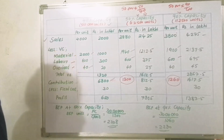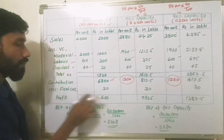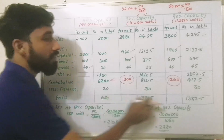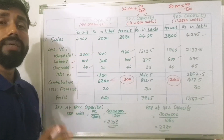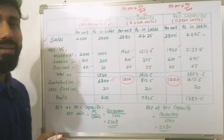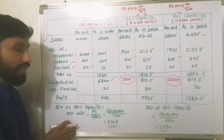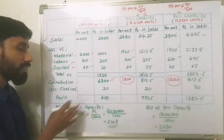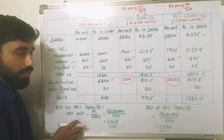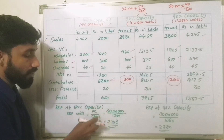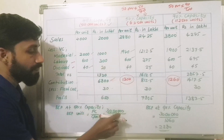Fixed cost is Rs. 30 lakhs. From contribution minus fixed cost, we can find the profit at 50% and 90% capacity. BEP in units at 50% capacity is fixed cost divided by contribution per unit. Fixed cost is Rs. 30 lakhs.